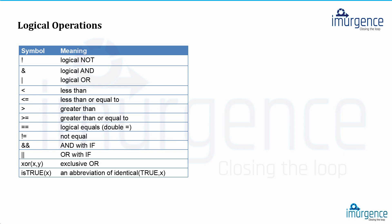Not equal to checks whether the left side is not equal to what is on the right-hand side. So if you have 4 != 5, it will check whether these two are similar — if they are not similar, it returns true, because that is what you intend to check. If you pass 4 != 4, it will return false, because they are actually equal, so the not-equal condition is false.